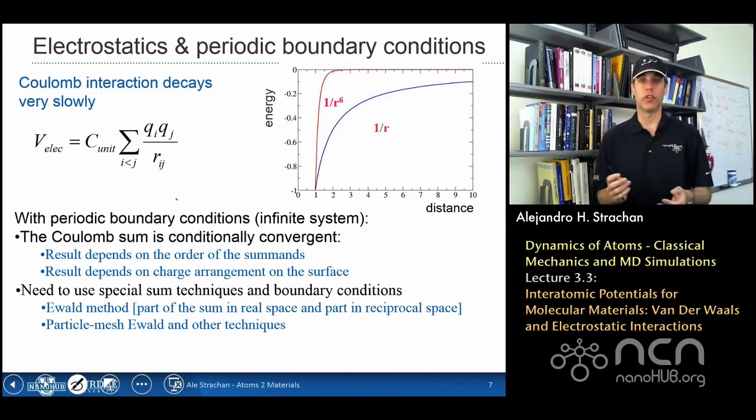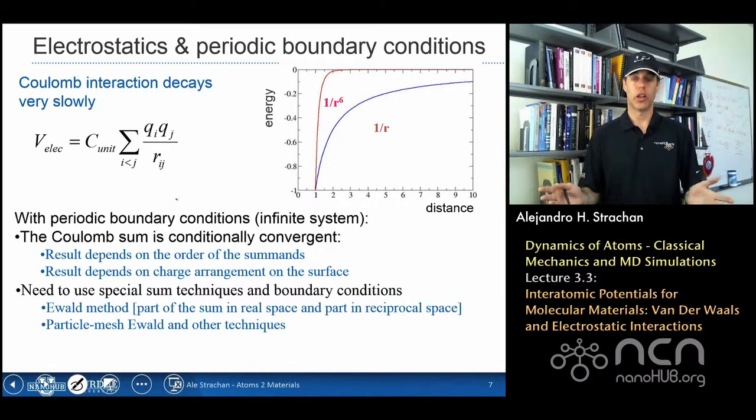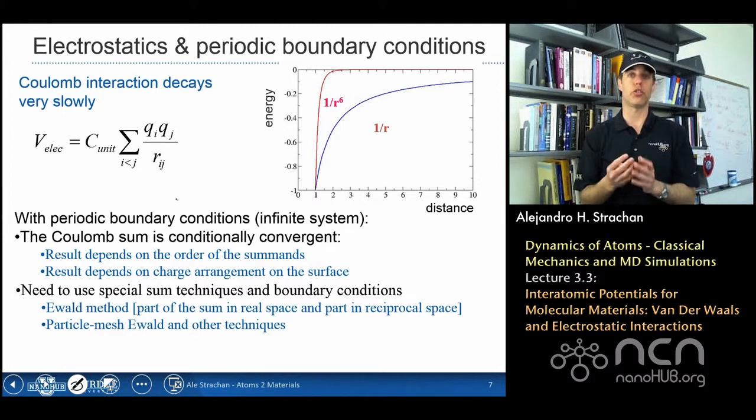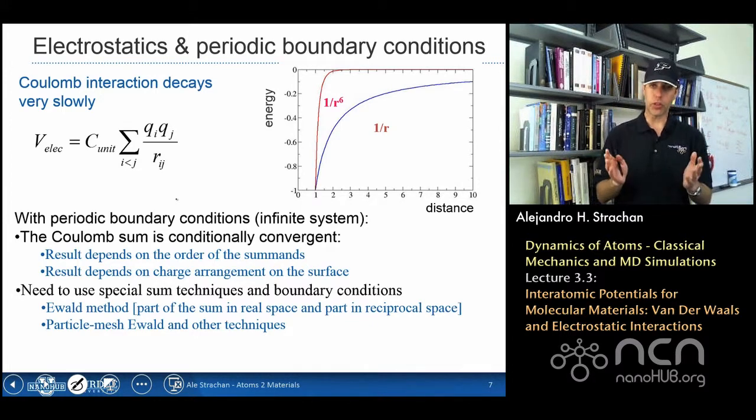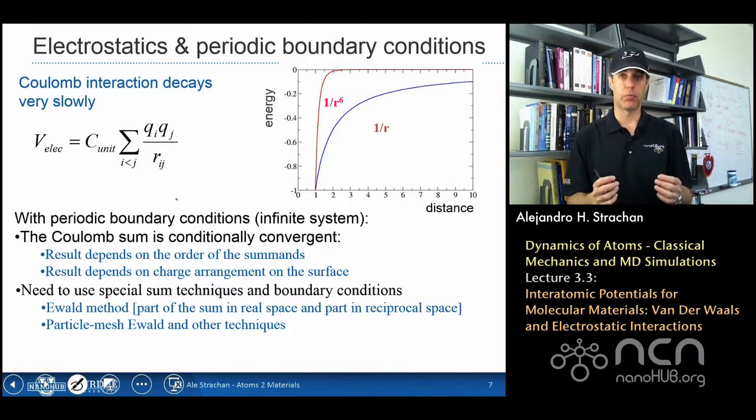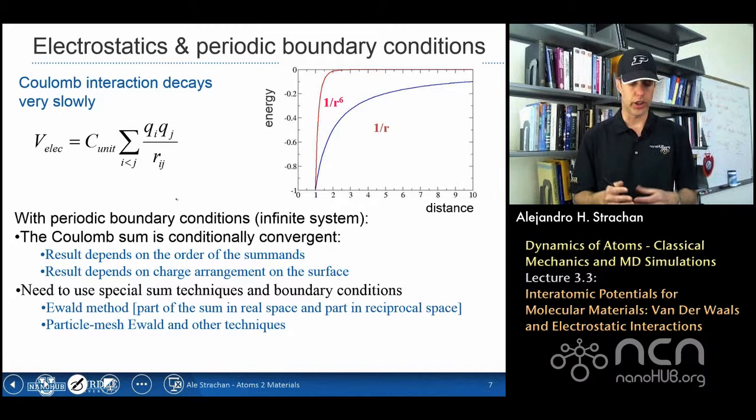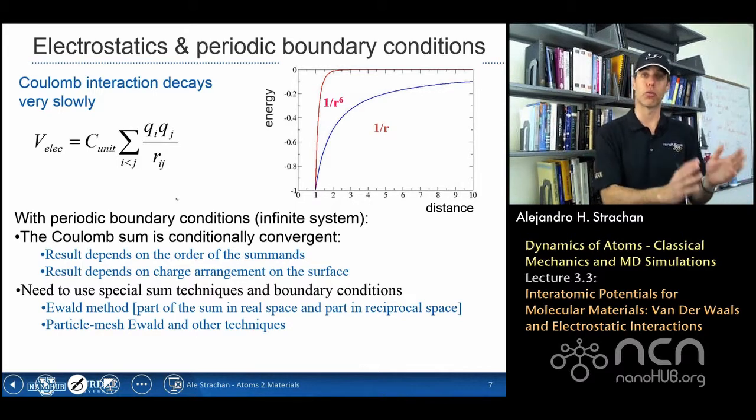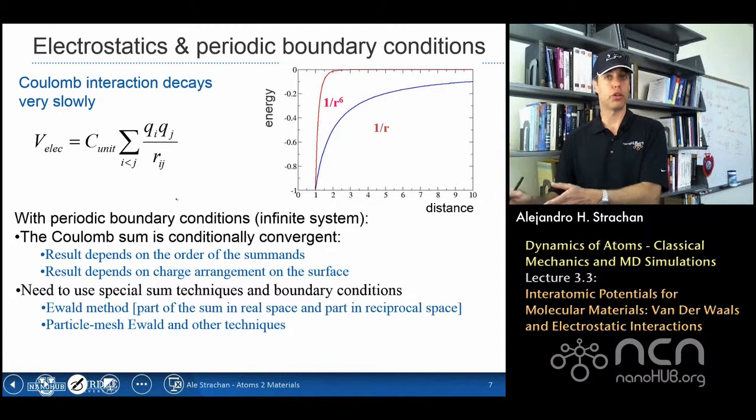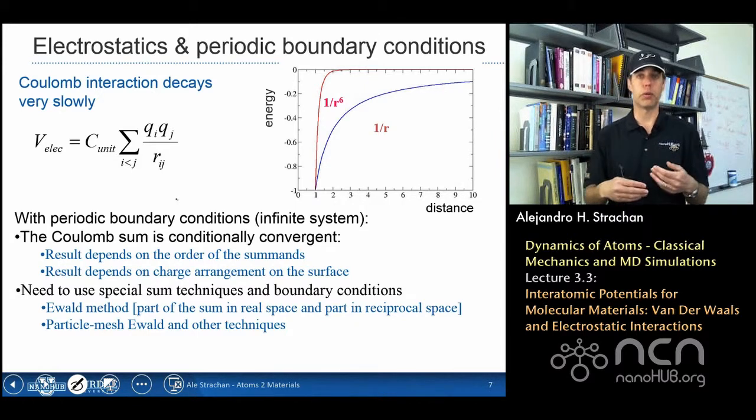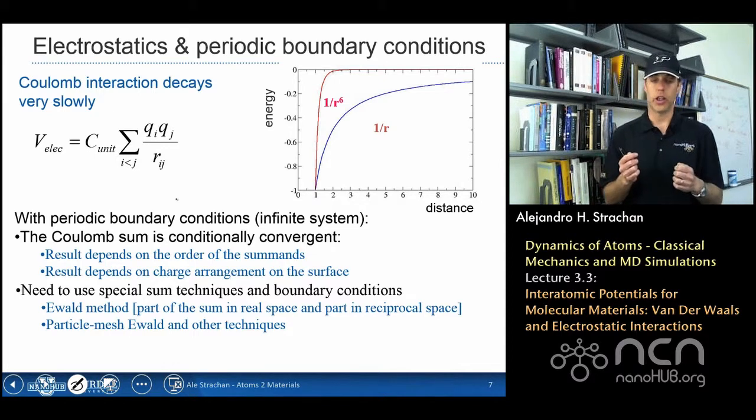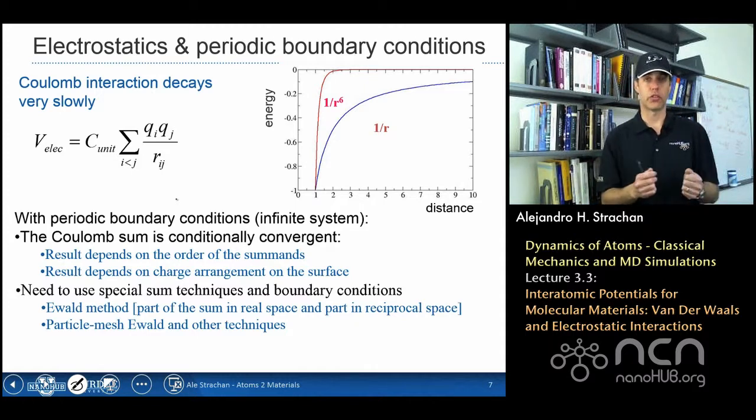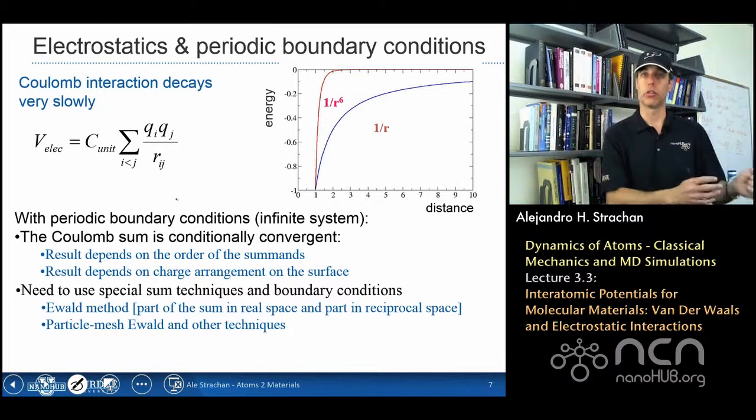So over the years people have developed special techniques to deal with these infinite sums, and you need to make a decision on the boundary condition that you're going to apply at infinity, and a method that solves this problem that's a classic solution called the Ewald method. The trick of the Ewald method is part of the sum is done in real space, and part of the sum is done in reciprocal space, and over the years people developed other techniques to do these Ewald sums in a computationally less intensive way, and those methods are called particle mesh Ewald.